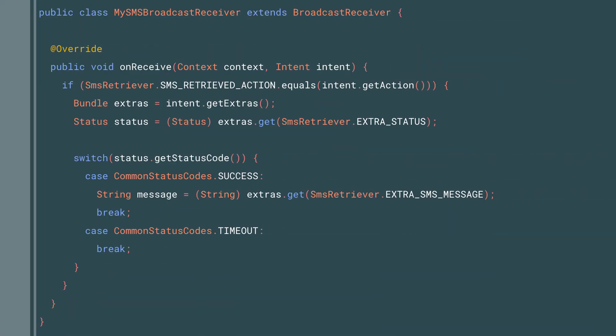Let's take a look at the code for that receiver. In the onReceive of the broadcast receiver, you're able to get the extras and pull the status from there. If the status indicates that the message was successfully received, you can then pull the message from the extras. From here, you can parse out the verification code and send it back to your server to verify that it was received, and thus verify your phone.